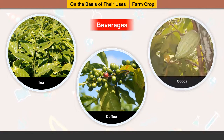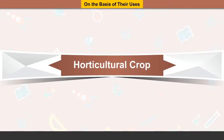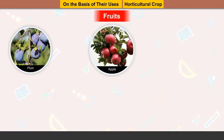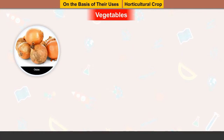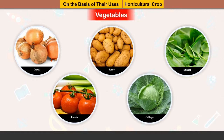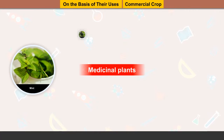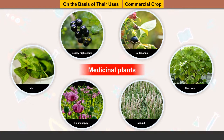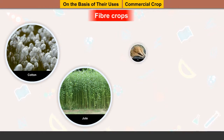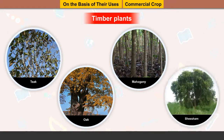Beverages: tea, coffee, cocoa. Sugar crops: sugarcane, sugarbeet. Horticulture crops — Fruits: plum, apple, mango, grapes, guava, etc. Vegetables: onion, potatoes, spinach, tomato, cabbage, radish, carrot, beetroot, cauliflower, etc. Commercial crops — Medicinal plants: mint, deadly nightshade, belladonna, cinchona, isabgul, opium poppy, etc. Fiber crops: cotton, jute, flax, hemp, etc. Timber plants: teak, oak, mahogany, shisham, etc.